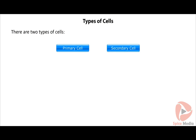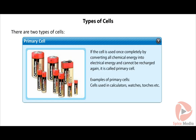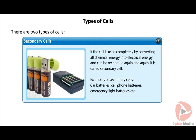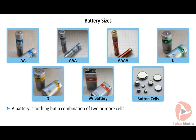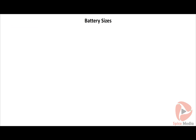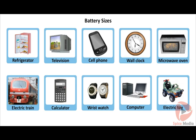There are two types of cells: primary and secondary cells. If the cell is used once completely by converting all chemical energy into electrical energy and cannot be recharged again, it is called a primary cell. If the cell can be recharged again and again after use, it is called a secondary cell. A battery is a combination of two or more cells, and batteries are available in various sizes.